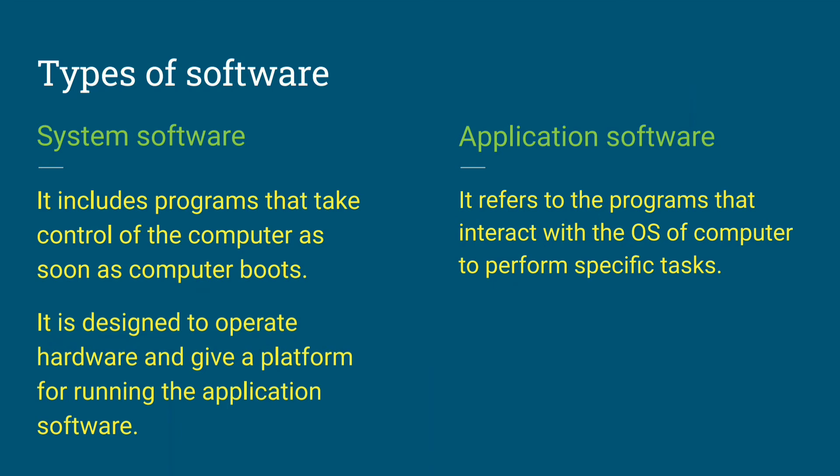System software is the main software. It operates the hardware and also operates the other application software. These are the application softwares — machine software which operates the hardware and which operates the other application software.